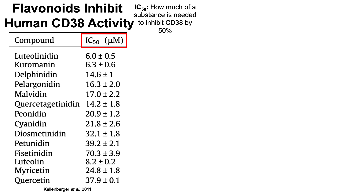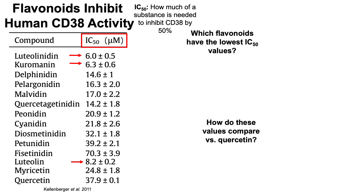The three flavonoids with the lowest IC50 values for inhibiting CD38 are luteolinidin, curomanin, and luteolin at 6 to 8 micromolar. Interestingly, quercetin's IC50 was about 38 micromolar. So luteolinidin and curomanin are about six times more effective at inhibiting CD38 than quercetin, and luteolin is about four to five times better.